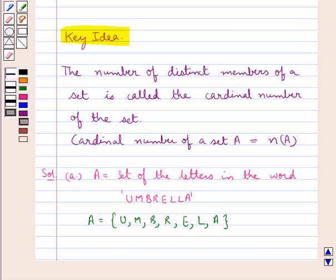Since repetition of elements is not allowed in sets, we write the letter L only once, though it appears twice in the word 'umbrella.'